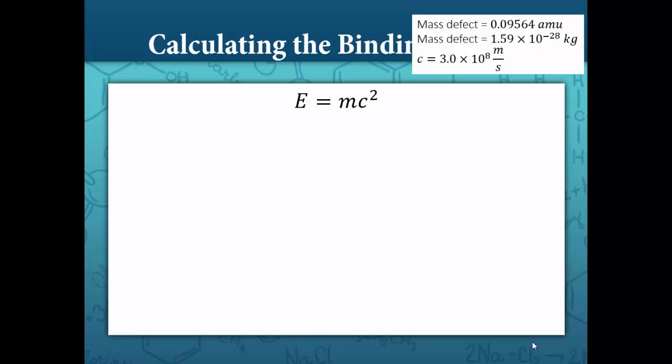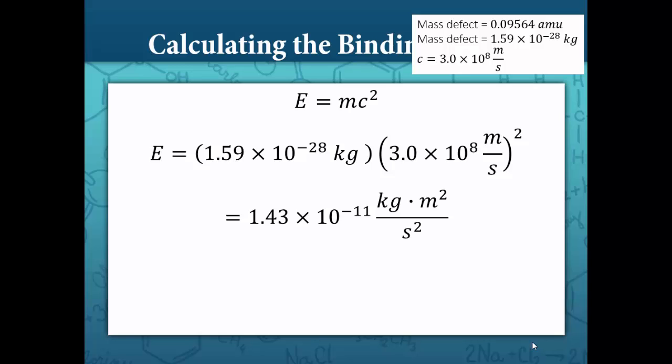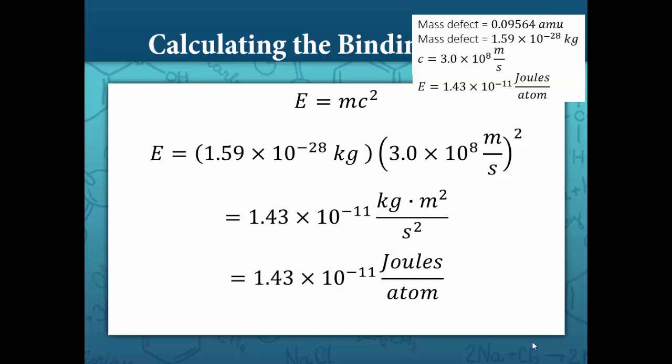Now we can plug our values into E equals MC squared. M is equal to 1.59 times 10 to the negative 28 kilograms, and the speed of light is 3.0 times 10 to the 8th meters per second, which we square. The binding energy, or energy equivalent of the mass defect, is 1.43 times 10 to the negative 11 joules per atom. So that's how much energy is released per carbon atom.